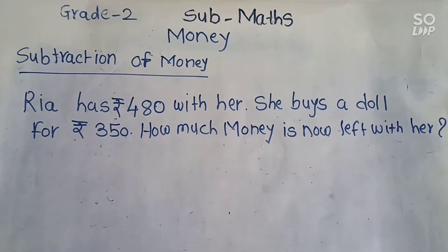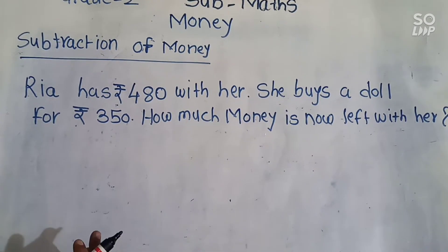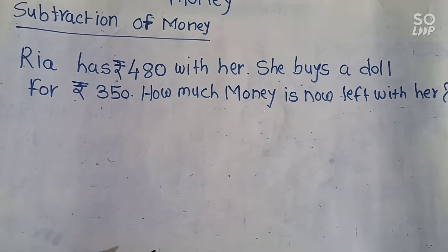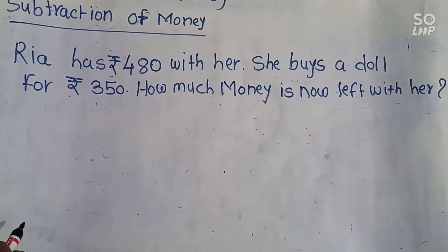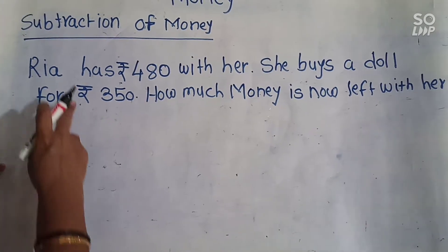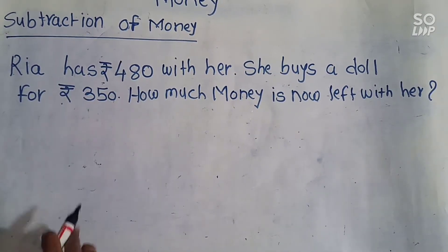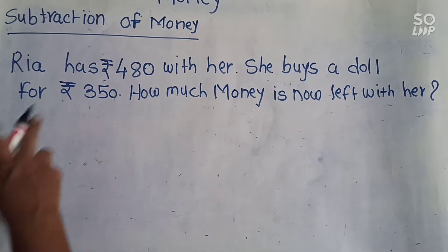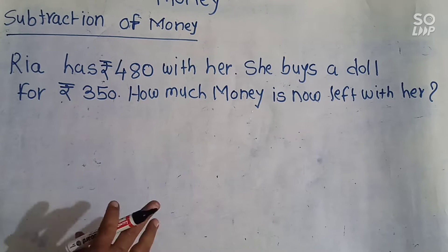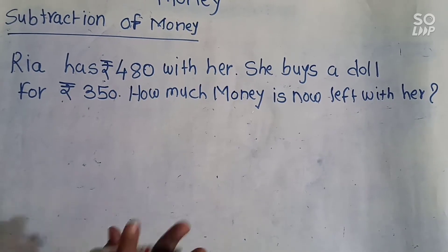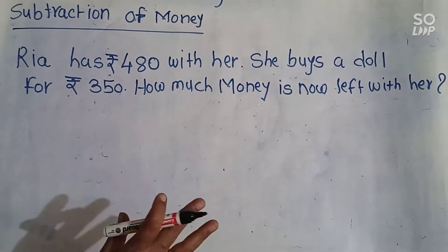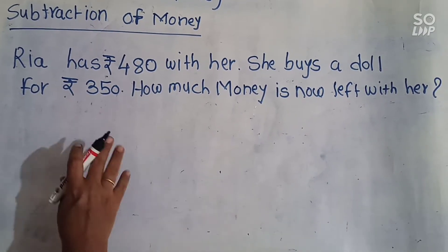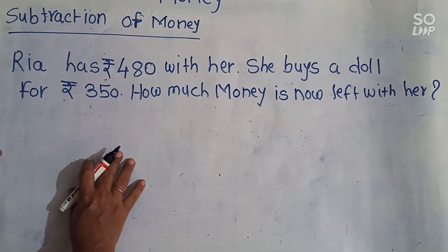Okay. Here we have to do subtraction. Rhea has 480 rupees and she has bought a doll for 350. So how much money is now left with her? We have to do subtraction.